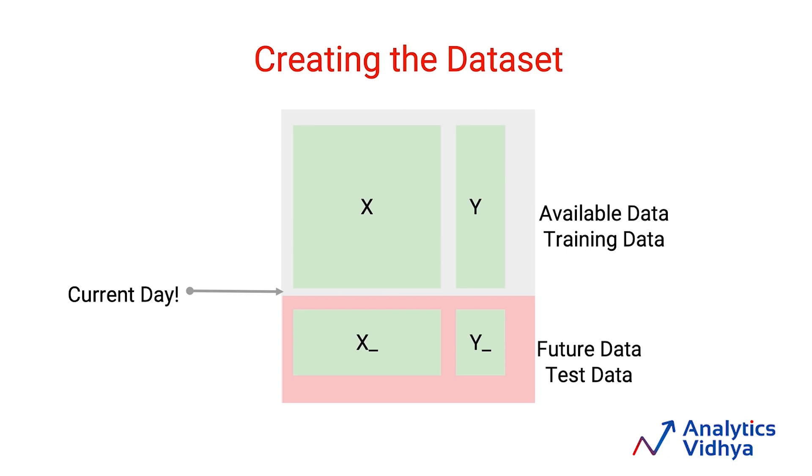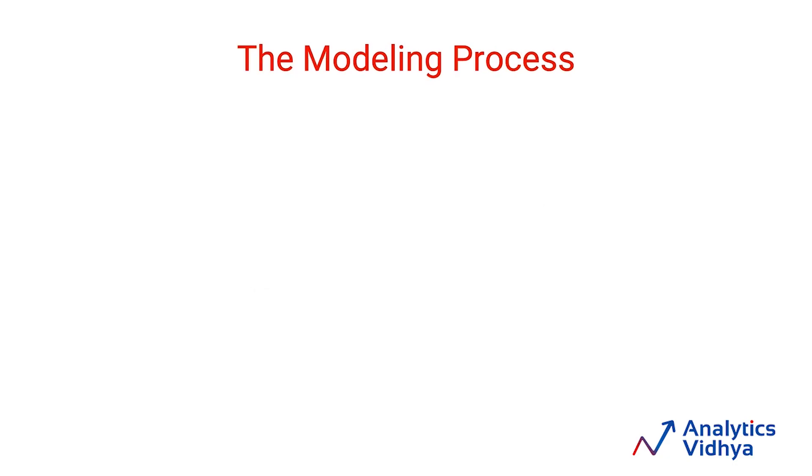Before we move forward, I wanted to call out that the modeling process is actually iterative in nature. You never go out and build your perfect model in the first shot. Instead, what you do is build a model and then continuously improve on it. Let me bring that out in the way the modeling cycle actually looks.